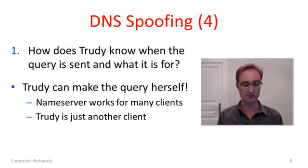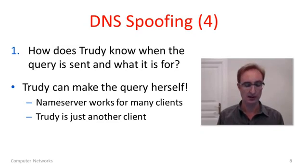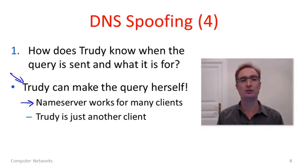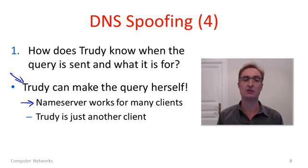Here's how you could go about solving those issues. First, how does Trudy know what request the DNS name server is making? For the one she wants to poison, easy — Trudy can just make the query herself of the local name server, and this will cause it to use the DNS protocol to try and find out. A name server is really a device which works on behalf of a pool of local clients, and Trudy can act as another of those local clients. Often local name servers don't have access restrictions on them because they want to make it easy for many different clients of the local ISP to use them.